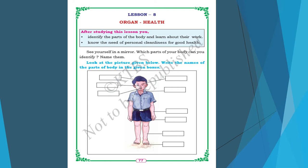Here they are given in a box — a picture of a boy. You can identify the parts: head, eyes, nose, mouth, neck, hand, finger, leg, toes. We also have stomach and ear. All these are different parts of our body.